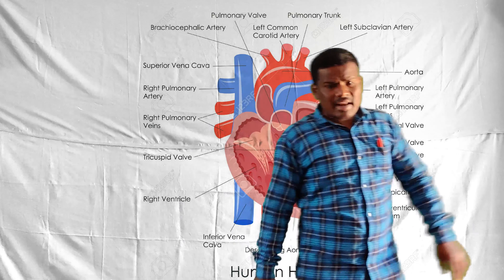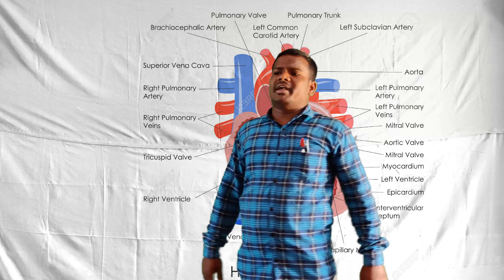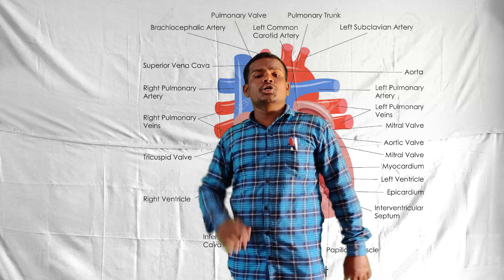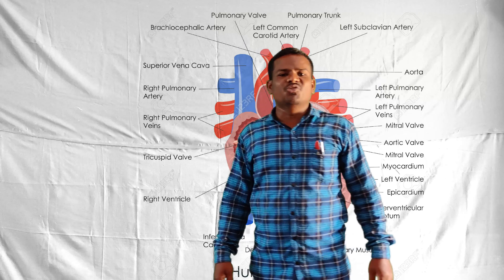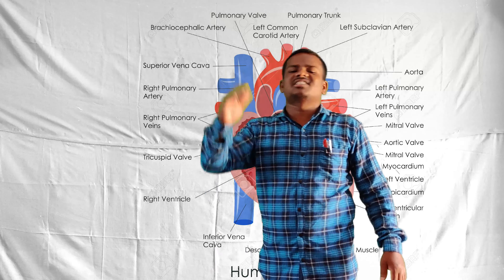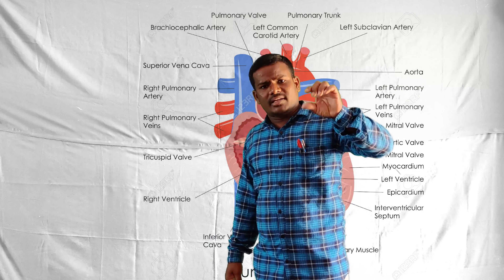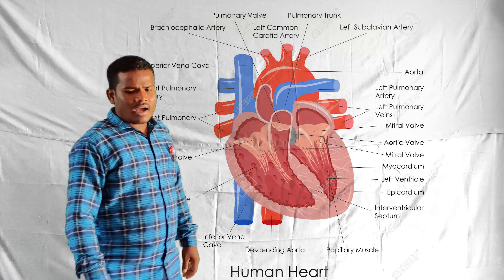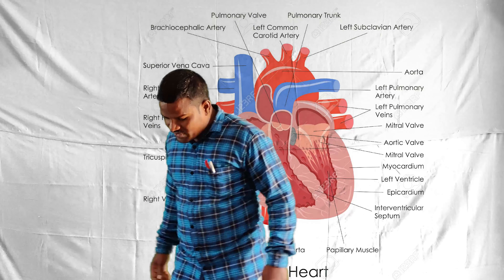Blood pressure - the normal blood pressure in humans is 120 over 80. In that, 120 is systole and 80 is diastole. Systole has the higher number because it is the active phase - the blood is being pushed from one chamber to the next. Diastole is the relaxation phase, which is why its number is less when comparing to systole.